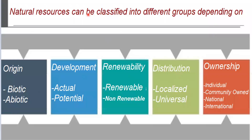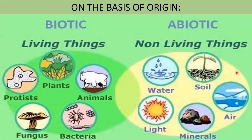Natural resources of the earth can be classified into different groups depending on origin, development, renewability, distribution, and ownership. Let us see all these one by one in detail. First, let us see about natural resources on the basis of origin. On the basis of origin, they are classified as biotic resources and abiotic resources.